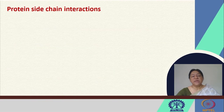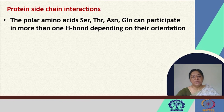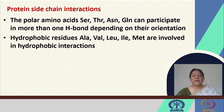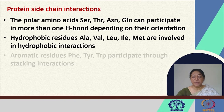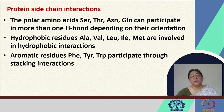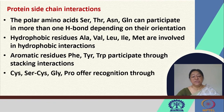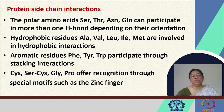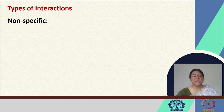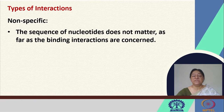Looking at protein side chain interactions involved, we have polar amino acids that can participate in hydrogen bonding depending on their orientation in the protein, hydrophobic residues involved in hydrophobic interactions, aromatic residues that can participate through stacking interactions, and specific recognition through special structural motifs of the protein and DNA in their interactions. The types of interactions can be non-specific in nature — where the sequence of the nucleotides does not matter as far as the binding interactions are concerned; binding will occur irrespective of what sequence the nucleotides are in.